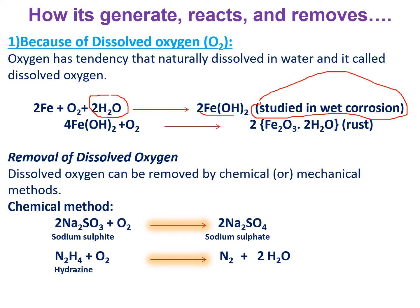Iron is in the zero oxidation state here. When it increases in oxidation state, that is called oxidation, so iron is involved in corrosion. Further reacting with oxygen, it forms rust — Fe2O3·2H2O. So the dissolved oxygen in water interacts with iron and destroys it.